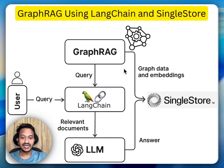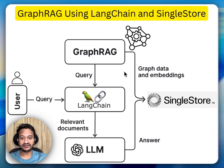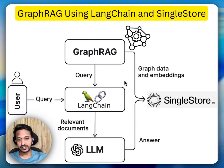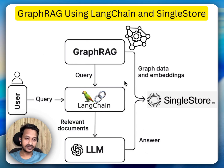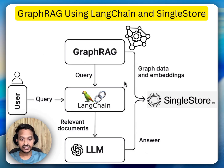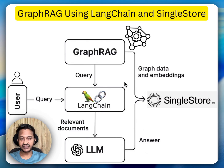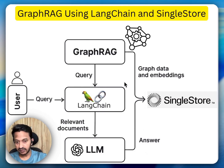So let's understand what exactly GraphRAG is. It's like RAG — Retrieval Augmented Generation — but with superpowers. Instead of just doing a vector search based on text similarity, GraphRAG basically expands your query using a knowledge graph, which understands relationships between concepts, people, ideas, and so on.